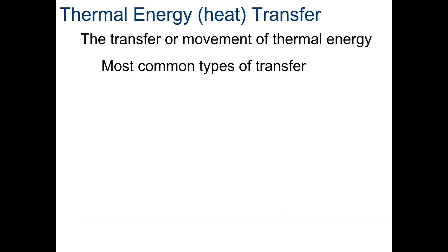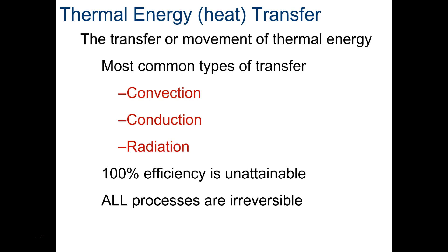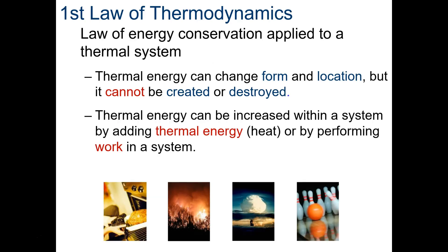Thermal energy, heat transfer, the transfer movement of thermal energy. The most common types of transfer are convection, conduction, and radiation. A hundred percent efficiency is unattainable, like always in all of our systems. You never get a hundred percent or better, ever, in the real world. And all processes are irreversible. First law: the law of energy conservation applied to thermal systems. Thermal energy can change form and location, but it cannot be created or destroyed. Thermal energy can be increased with the system by adding thermal energy, heat, or by performing work in a system. That's very important.